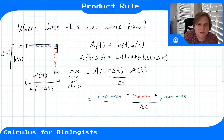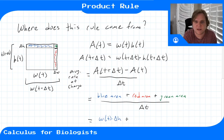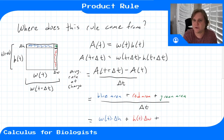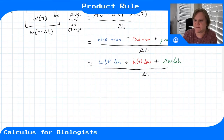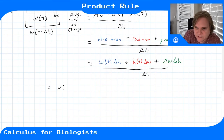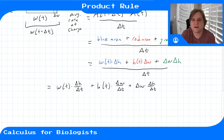The blue area has height delta h and width w of t, so blue equals w of t times delta h. The red area has width delta w and height h of t, so red equals h of t times delta w. The green area has width delta w and height delta h. All of that divided by delta t can be split up as: w of t times delta h over delta t, plus h of t times delta w over delta t, plus delta w times delta h over delta t.